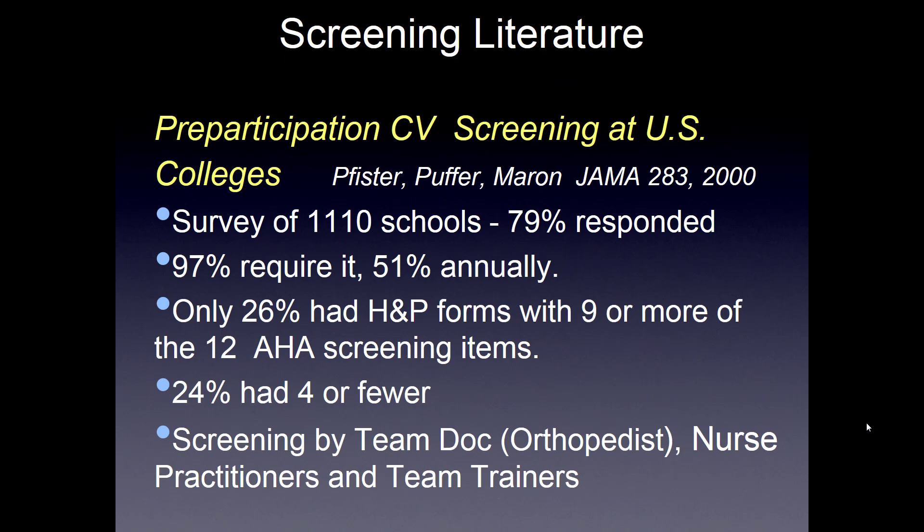The screening literature suggests some pre-participation screening in all U.S. colleges. They surveyed over 1,100 schools and almost 80% responded. 97% required it, 51% said annually. Only 26% had history and physical forms with 9 or more of the 12 American Heart Association screening items, and 24% had 4 or fewer. The screening was done by a team doctor, a nurse practitioner, and/or a team trainer.